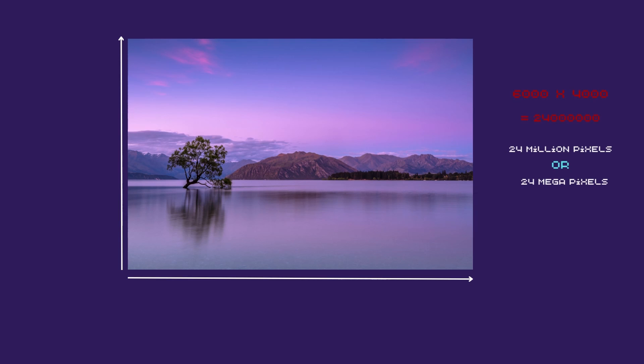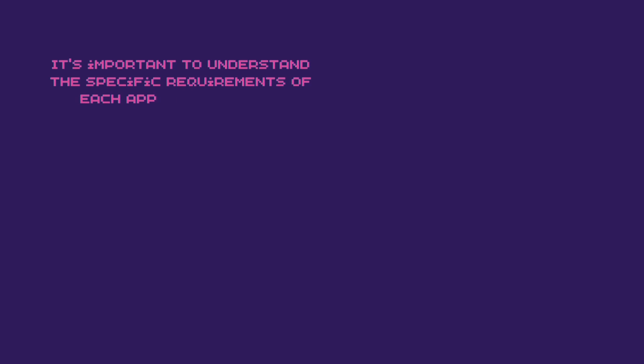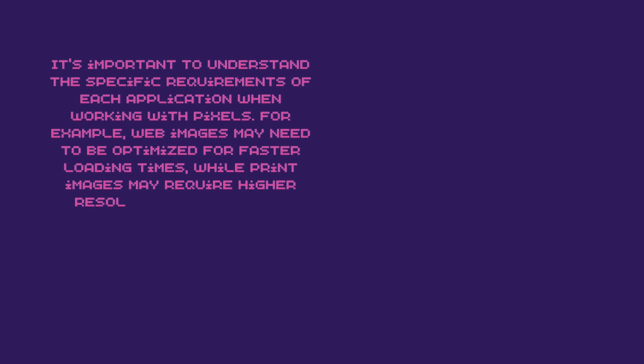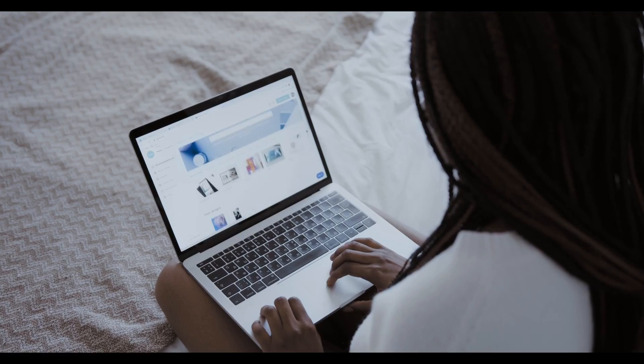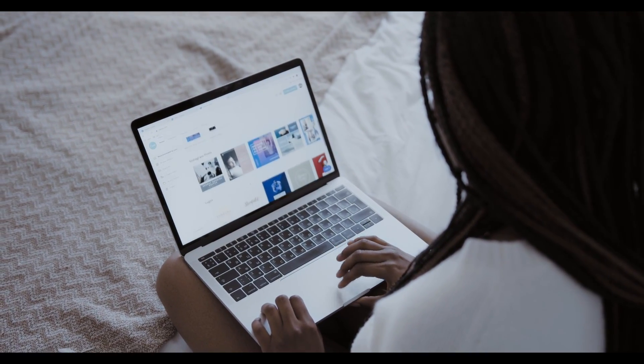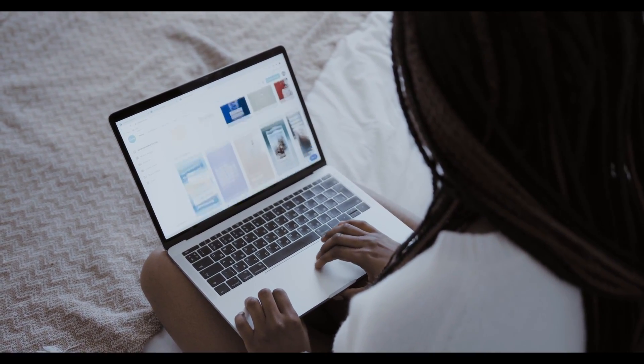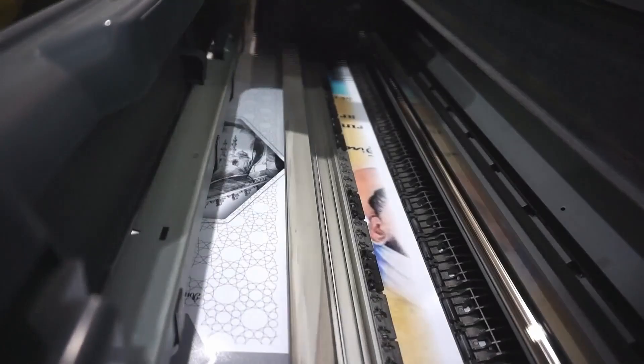It's important to understand the specific requirements of each application when working with pixels. For example, web images may need to be optimized for faster loading times, while print images may require higher resolutions for better quality. To optimize pixels for different applications, you may need to adjust the resolution, pixel density, or file format of your images.